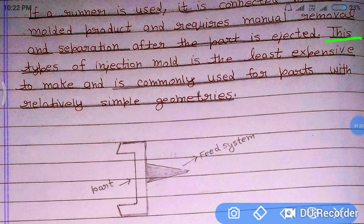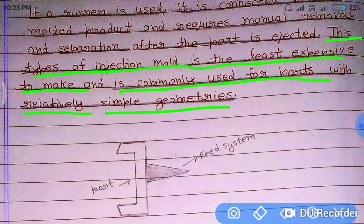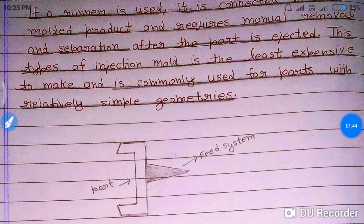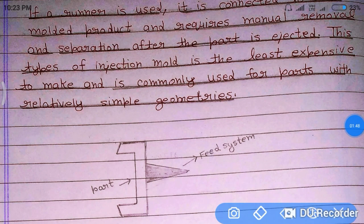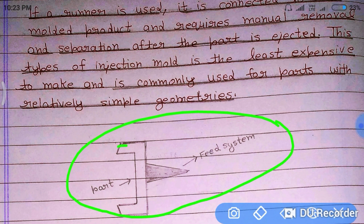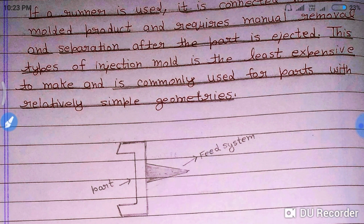This type of injection mold is the least expensive to make compared to the three-plate mold, and is commonly used for parts with relatively simple geometry. This is the two-plate mold product, and this is the part along with the feed system which is connected to it.